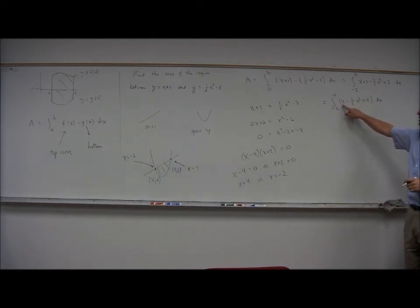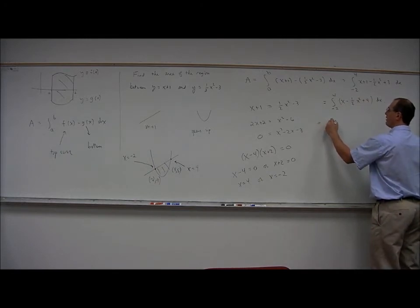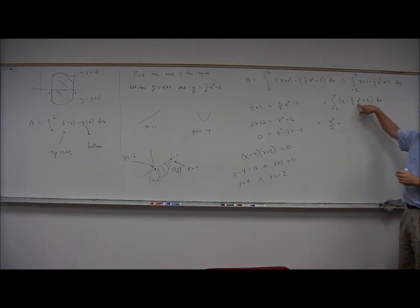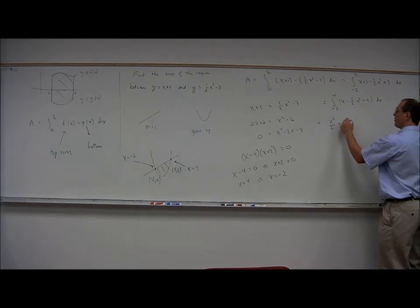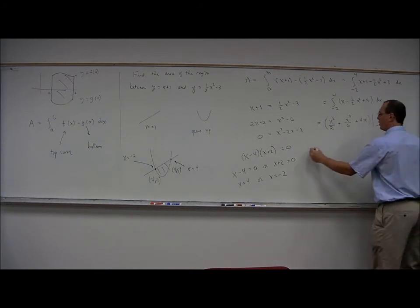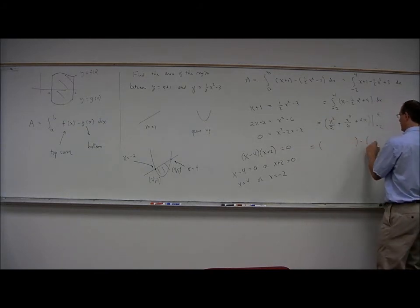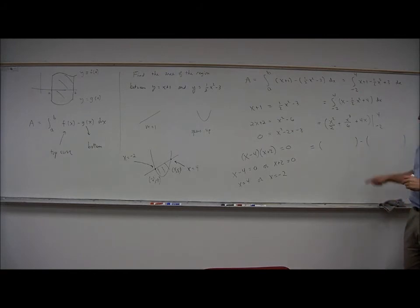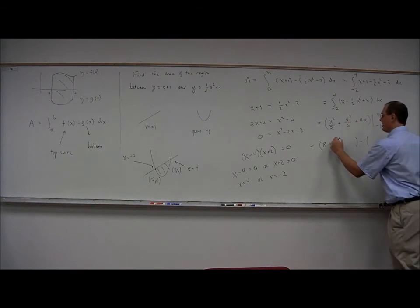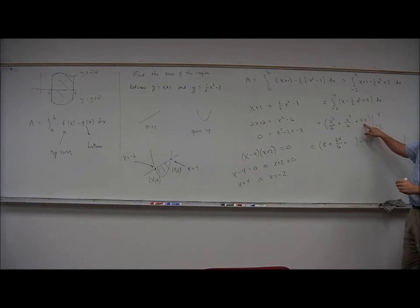And now we will integrate term by term. So the antiderivative is x squared over 2, and the integral of x squared is x cubed over 3, but there's already a 1 half there, so it's going to become x cubed over 6. And then the integral of 4 dx is 4x. And then we have to plug in negative 2 and 4. Plug in 4: 4 squared is 16 divided by 2 is 8, plus 4 cubed is 64 divided by 6, and then 4 times 4 is 16. So that's what we get when we plug in 4.